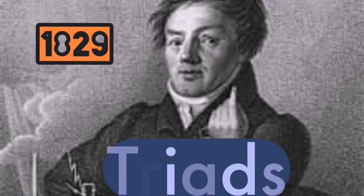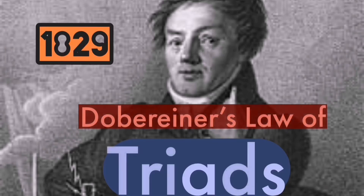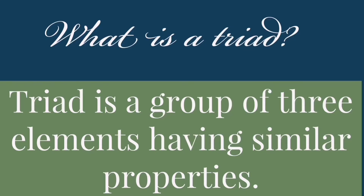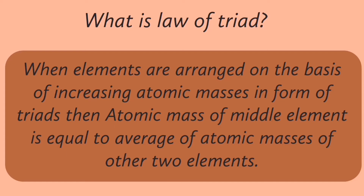In 1829, Döbereiner introduced the Law of Triads. A triad is a group of three elements having the same physical and chemical properties. According to the Law of Triads, when elements are arranged on the basis of increasing atomic masses in the form of triads, the atomic mass of the middle element is equal to the average of the atomic masses of the other two elements.